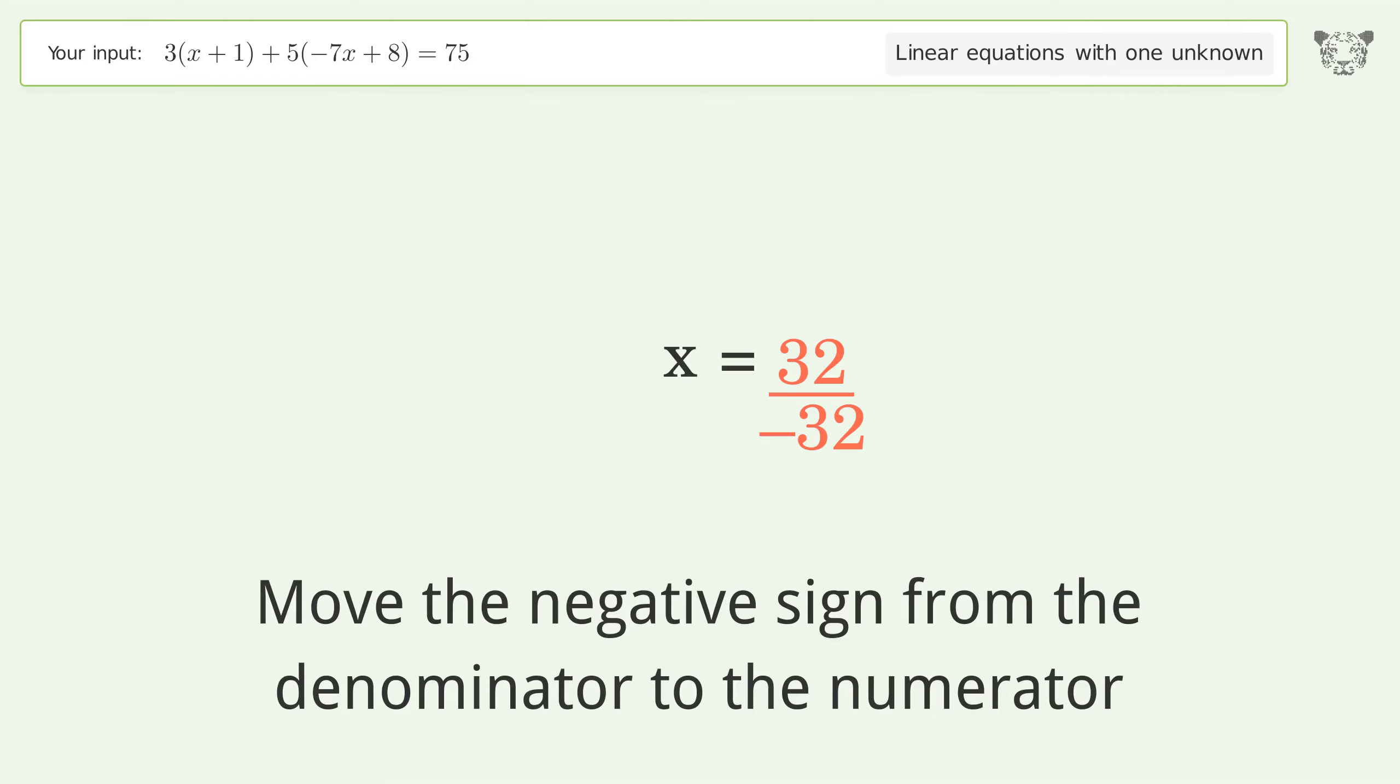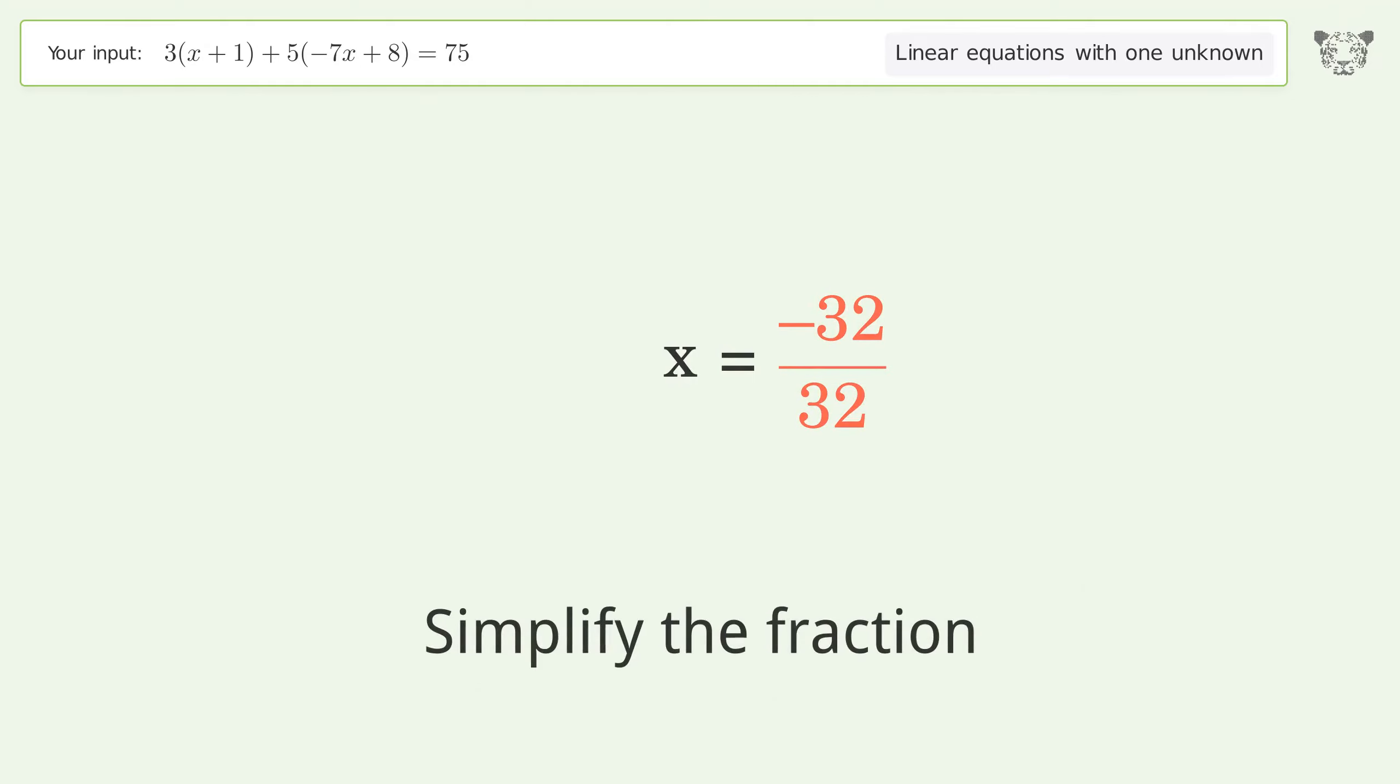Move the negative sign from the denominator to the numerator. Simplify the fraction. And so the final result is x equals negative one.